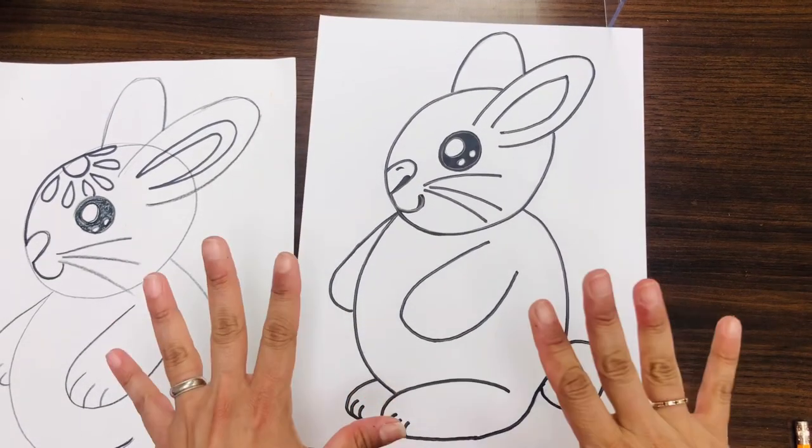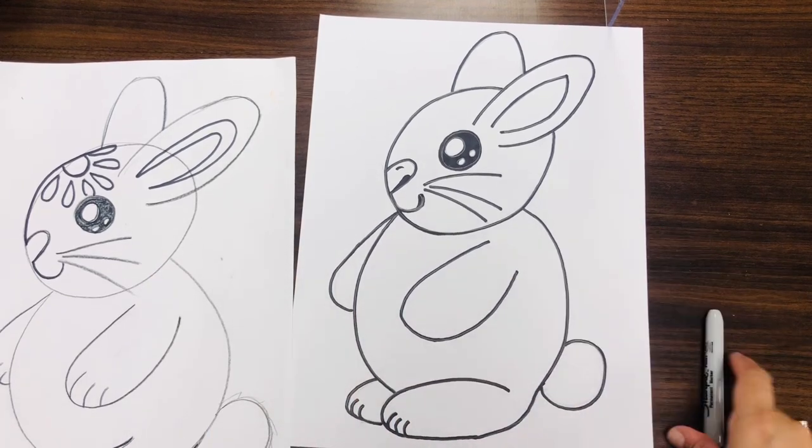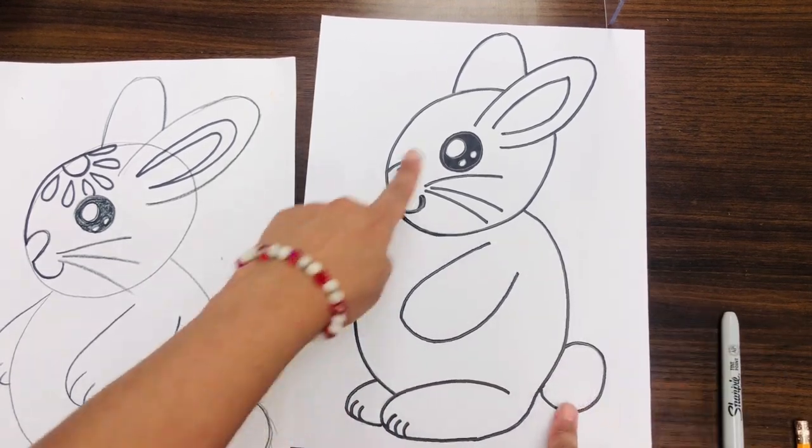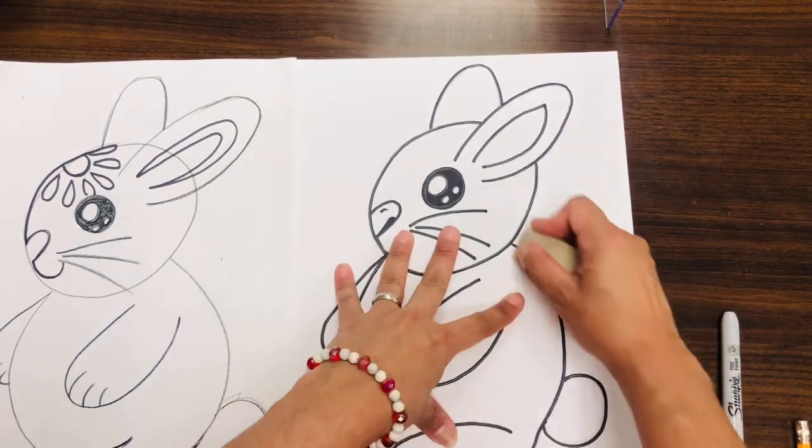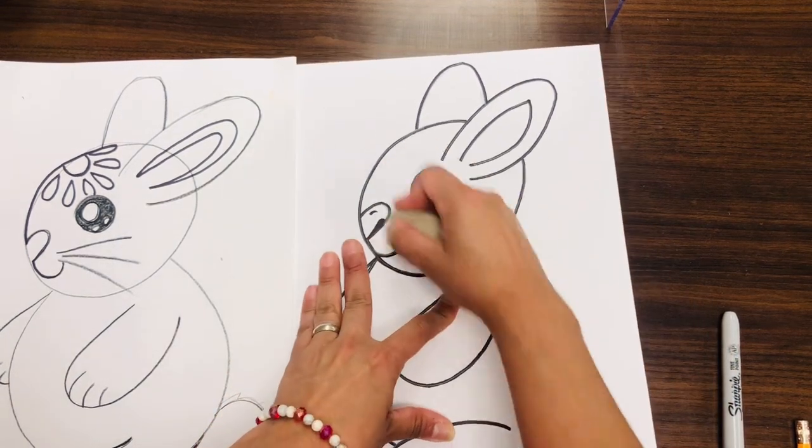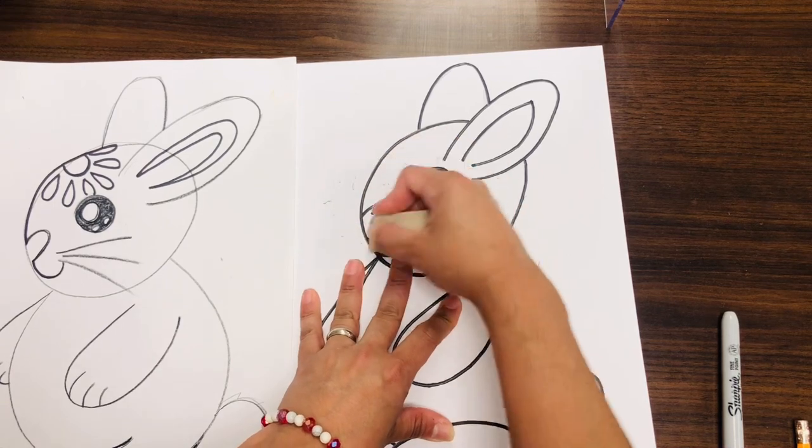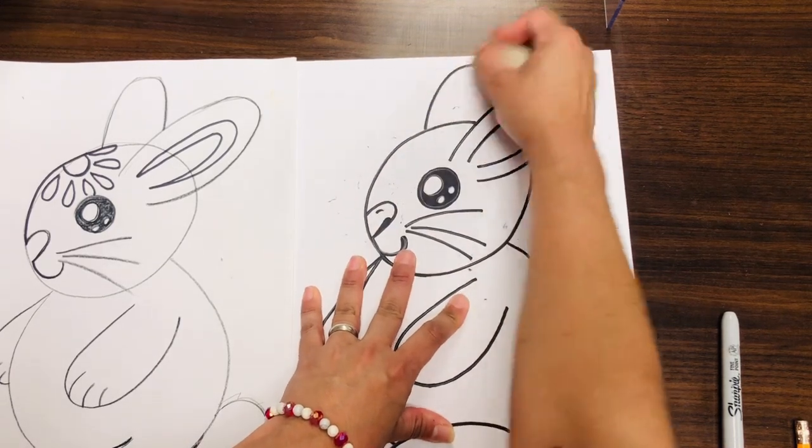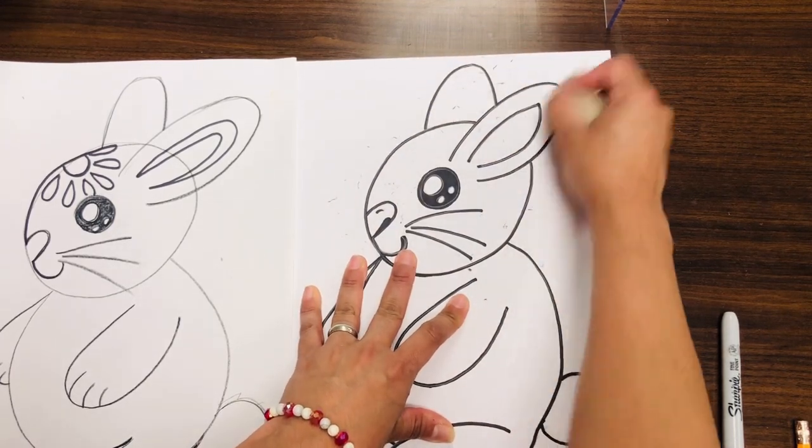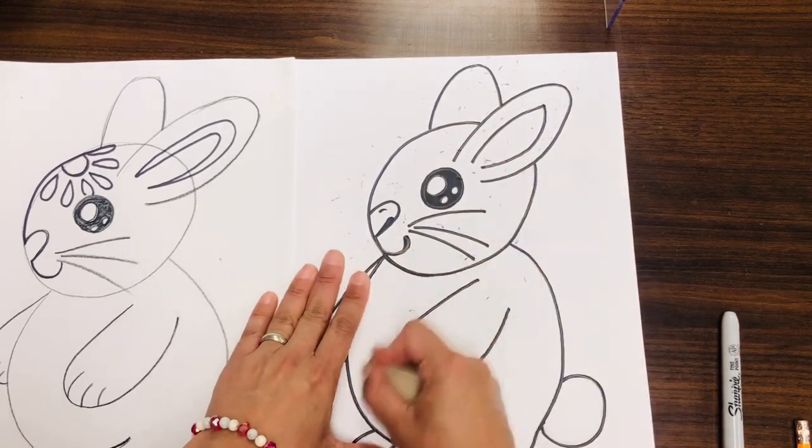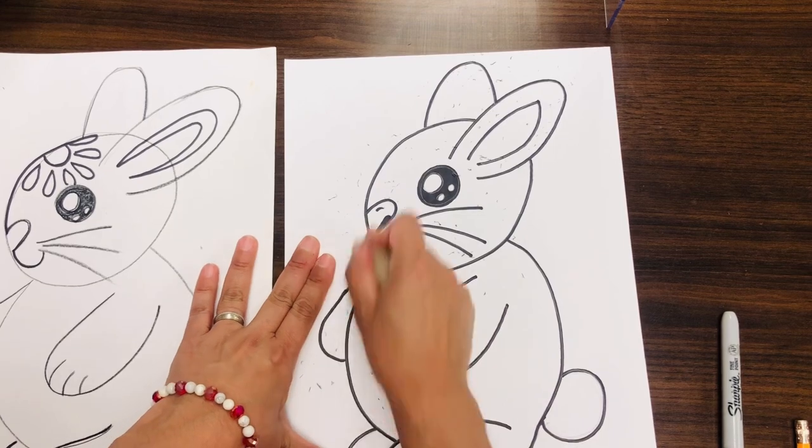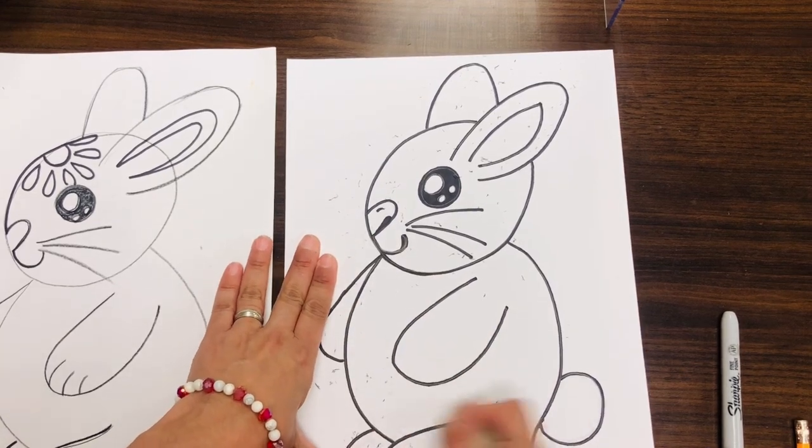Now that we are done outlining with our permanent marker, if you have any little lines that you need to get rid of before we begin our colorful marker and the spraying of the watercolor on top, go ahead and erase any unwanted pencil marks.